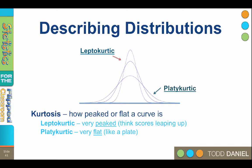A normal curve is mesokurtic — its kurtosis is medium. So kurtosis can be measured as leptokurtic, platokurtic, or mesokurtic depending on the peakedness of the curve.